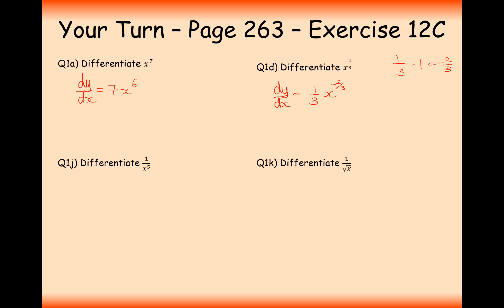How would we write (1/3)x to the minus 2/3 as a root? It would be 1 over 3, and then the cube root of x squared. The 1/3 coefficient doesn't get mixed up in the power — it just stays by itself at the front. Differentiating 1 over x to the 5: first rewrite this as x to the minus 5, then differentiate. So dy/dx equals minus 5 times x to the power of minus 6, because minus 5 take away 1 gives minus 6.